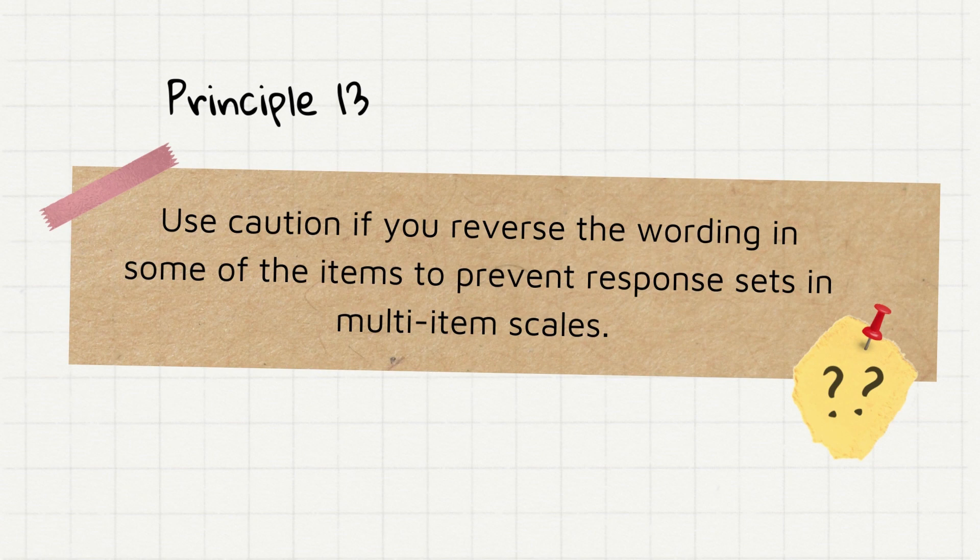Principle 13, use caution if you reverse the wording in some of the items to prevent response sets in multi-item scales. Reverse worded item is an item on which a lower score indicates a higher level on a construct of interest, and is also called reverse scored item. Researchers use this to encourage their participants to really read each item carefully. For example, one item in a Likert type scale may be worded as, Students must seek help from their school counselors regarding academic concerns. And then another item may be worded this way, School counselors must only be involved with giving the students psychological first aid and not in academic matters. So, as you can see, these two items speak of the same thing, but they elicit two different responses in a scale.